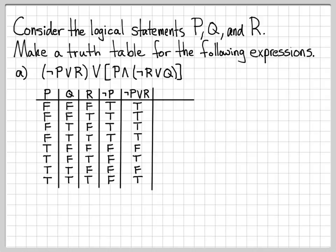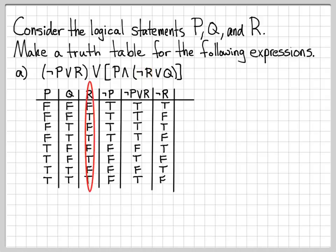Next I'm going to need a column for not R, because I have a not R in the expression. That's easy to fill in — all I do is look at the R column and negate everything. So instead of false, true, false, true, false, true, false, true, I have true, false, true, false, true, false, true, false.